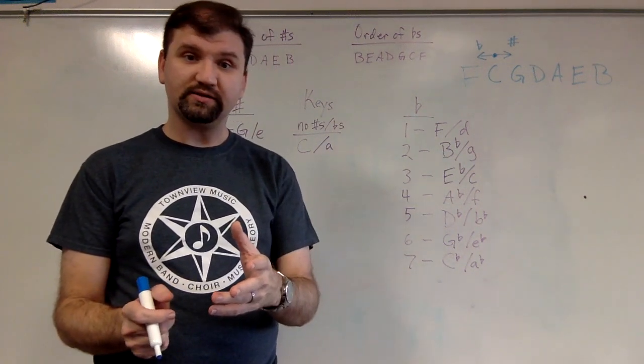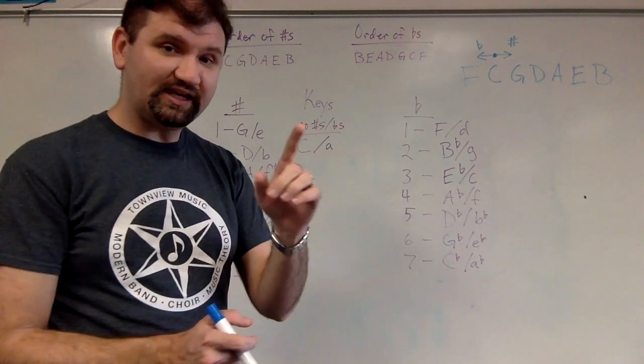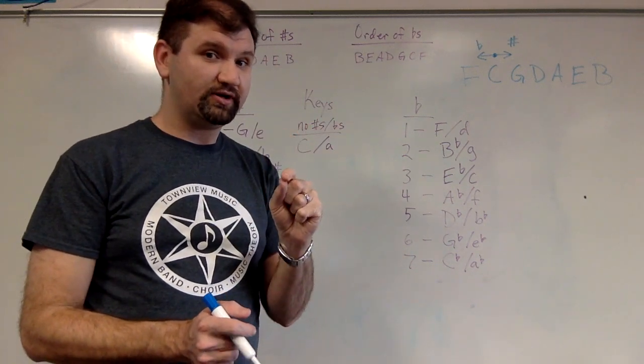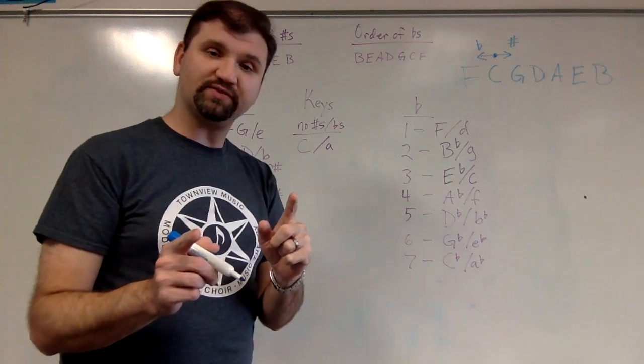What do I do for minor keys? Well, if C is the key that has no sharps and flats for major, what's the key with no sharps and flats for minor?